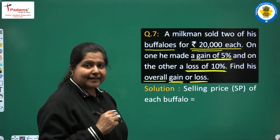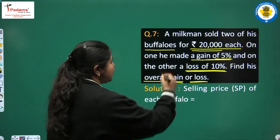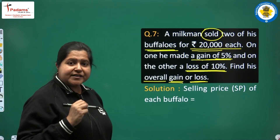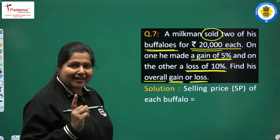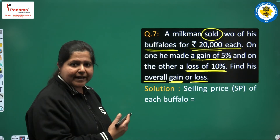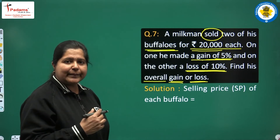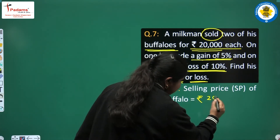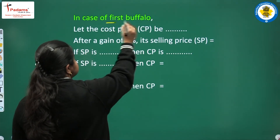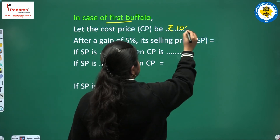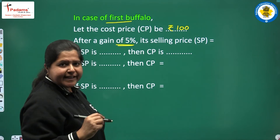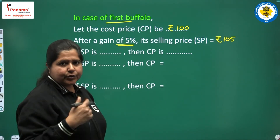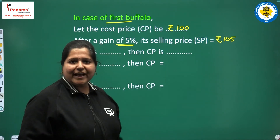How do we find gain or loss? On the value of the cost price. Selling price of each buffalo is given to be Rs. 20,000. Now in case of the first buffalo, let the cost price be Rs. 100. So gain is 5% in the first buffalo's case. The selling price will be Rs. 105 because 5% of Rs. 100 is Rs. 5. So Rs. 5 gain is done on the cost price. When cost price is Rs. 100, selling price will be Rs. 105.